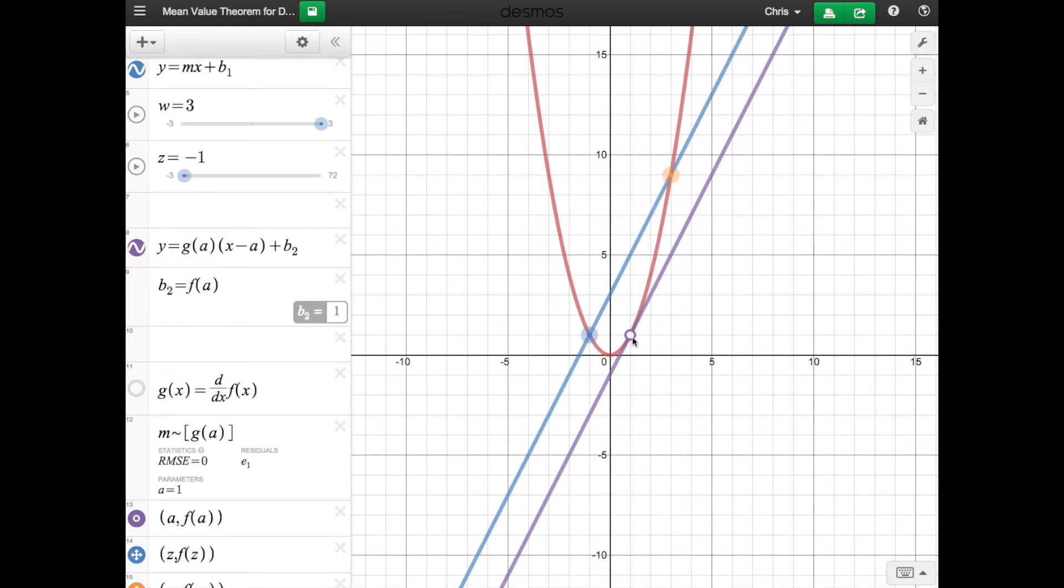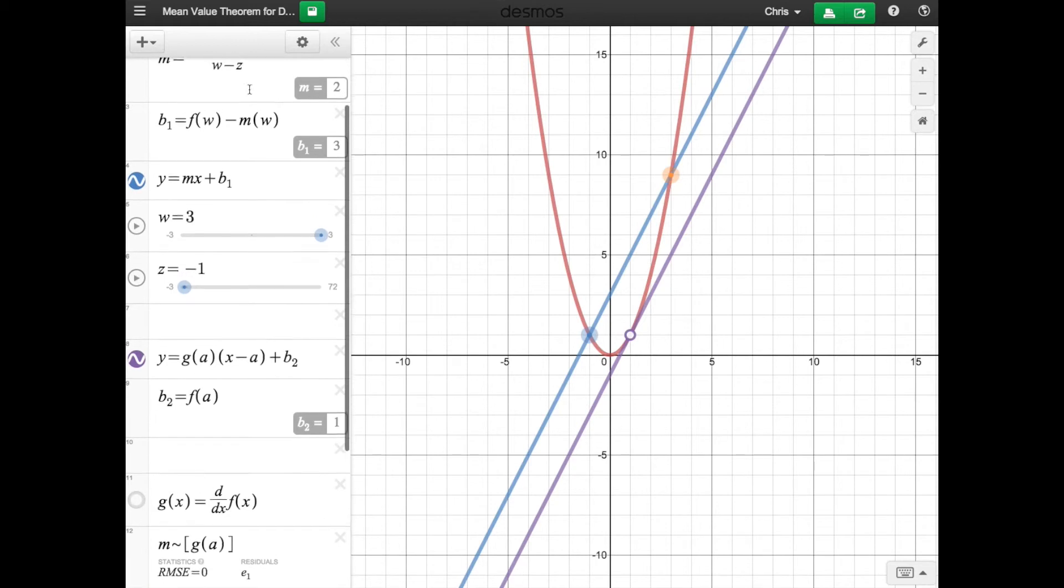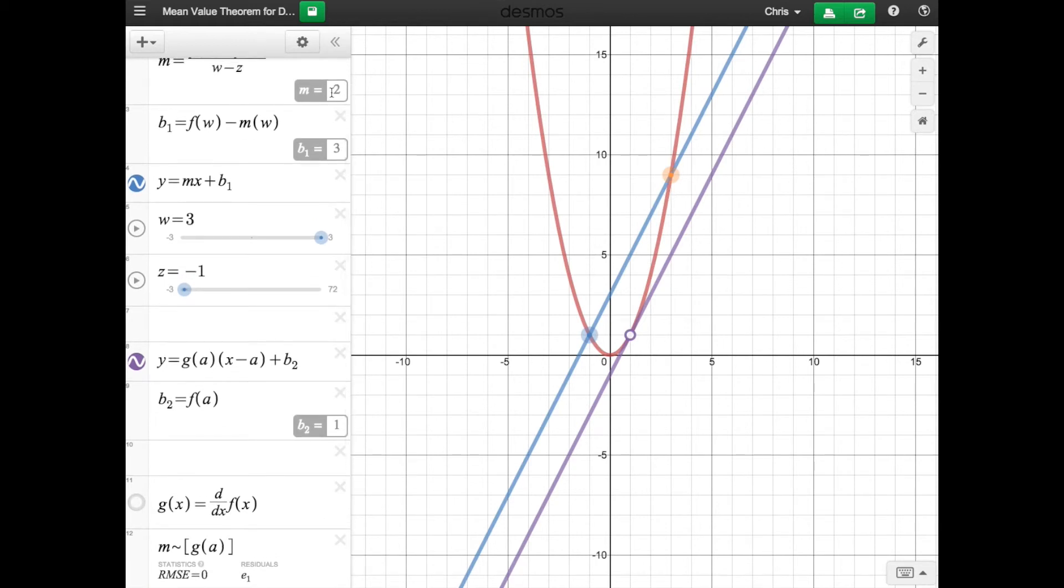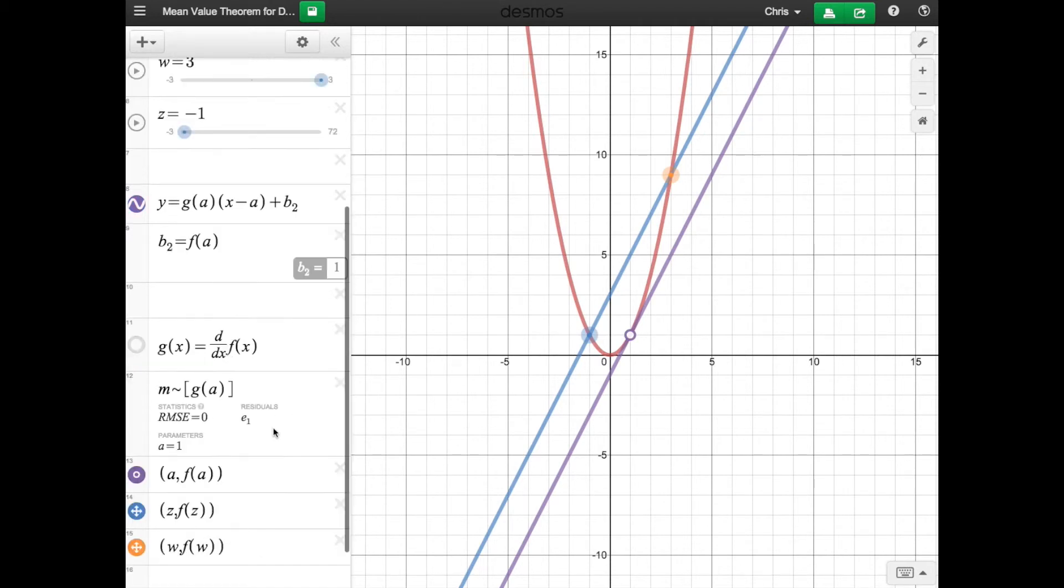So if you need the equation of that tangent line based on Mean Value Theorem, it shows it right here. The b is equal to one for the tangent line, as you can see it's equal to one right here. The slope is the same as the slope for the secant line, two right here. I didn't bother actually showing that because it's right up there. That's basically how it works, how I set it all up.